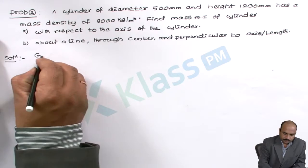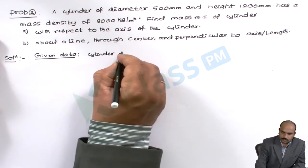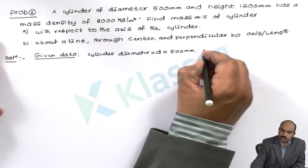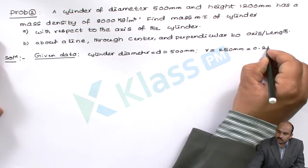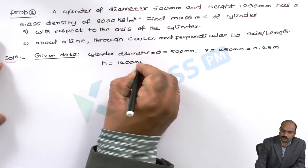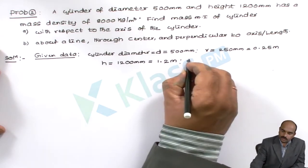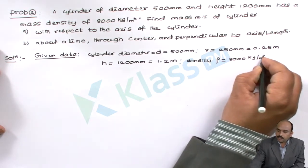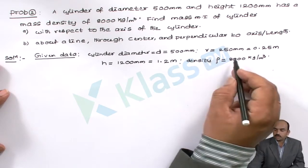Given data: cylinder diameter d = 500 mm, so its radius is 250 mm, converting to meters that is 0.25 m. The height of the cylinder H = 1200 mm, converting to meters that is 1.2 m. Mass density rho is given as 8000 kg per meter cube. All dimensions are converted to meters because density is given in terms of meters, so all units must be in the same system.